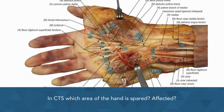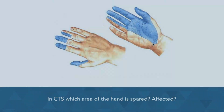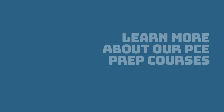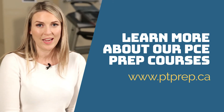We will then have sparing of the palm in carpal tunnel syndrome. So if we go back to this photo, we will see that the palm should not be highlighted in carpal tunnel syndrome. Hope this little hint helps you when you're studying for your PCE.